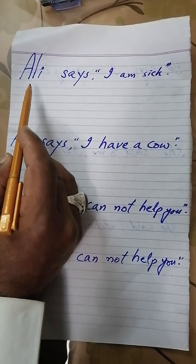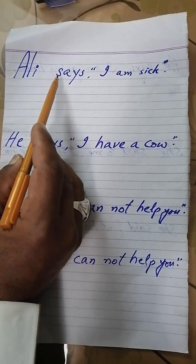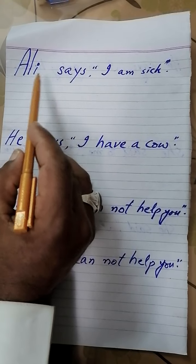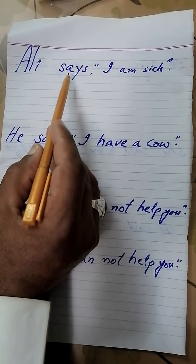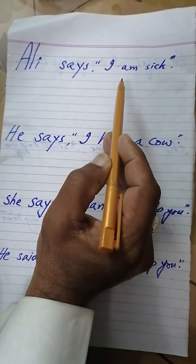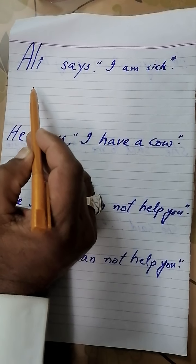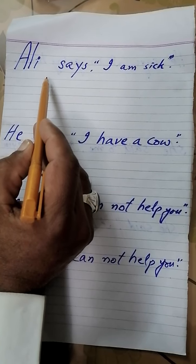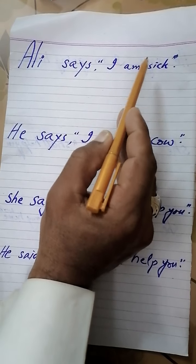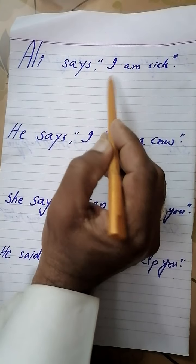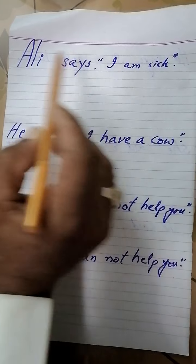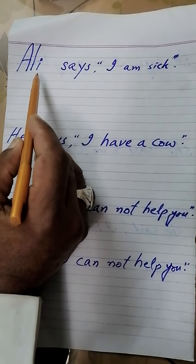Dear guys, we can see a sentence: 'Ali says I am sick.' There are two parts. 'Ali says' is the first part, whereas 'I am sick' is the second part. So the first part, 'Ali says,' is known as reporting speech, and the next part that is enclosed in inverted commas is known as reported speech. So this is called direct narration.